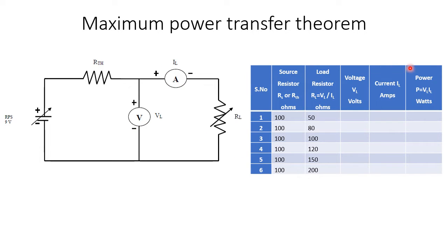This is the table we are going to use for the maximum power transfer theorem. The Thevenin's resistance, or source resistance, is assumed to be 100 ohms. So all 6 readings will have source resistance of 100 ohms, and the load resistance we are going to vary from 50 ohms to 200 ohms. As we know, maximum power will be transferred when the source resistance is equal to the load resistance.